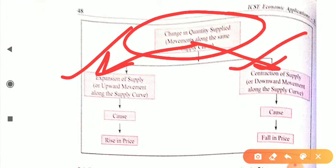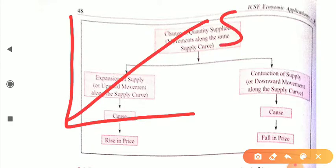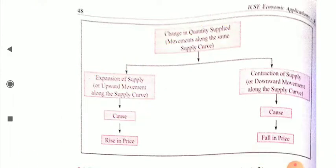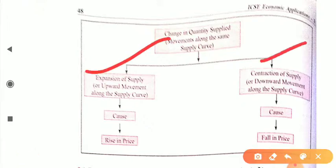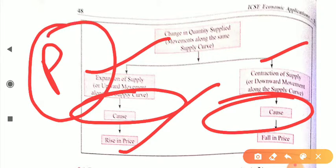Movement along the supply curve is divided into two parts: extension of supply and contraction of supply. Extension of supply means upward movement along the supply curve, and contraction of supply means downward movement along the supply curve. The basic cause for both extension and contraction is price.